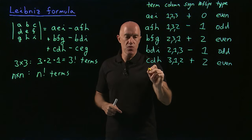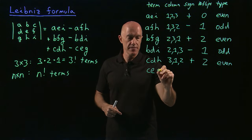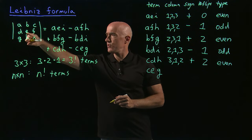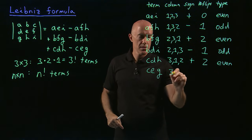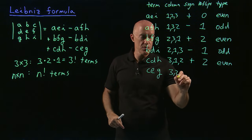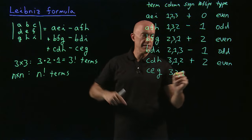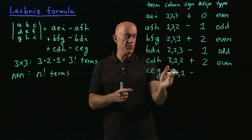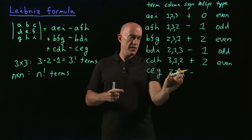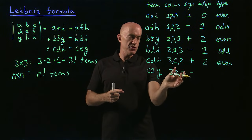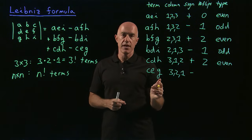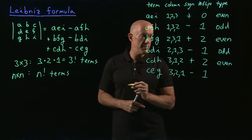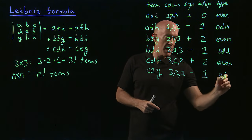And the last one, C, E, G. The column order is 3, 2, 1. That gets a minus sign. How do we get from 3, 2, 1 to 1, 2, 3? We just interchange one and three — that's one permutation, or one flip. One is odd.